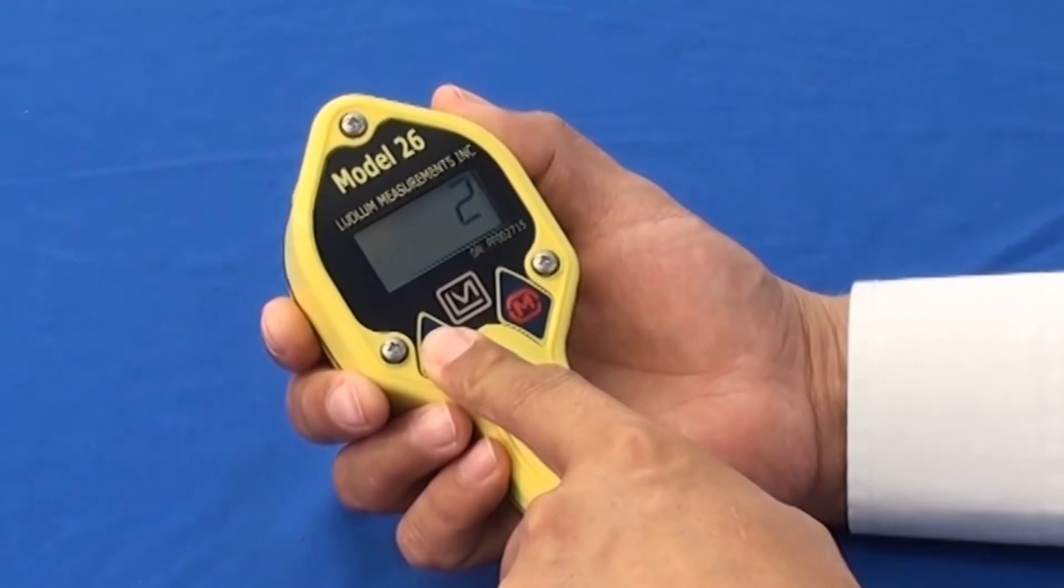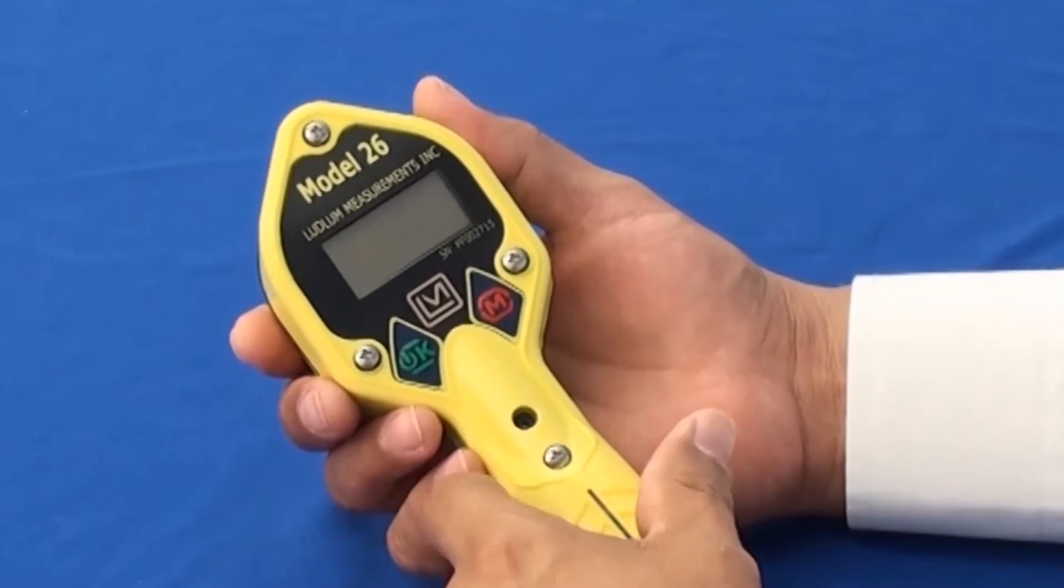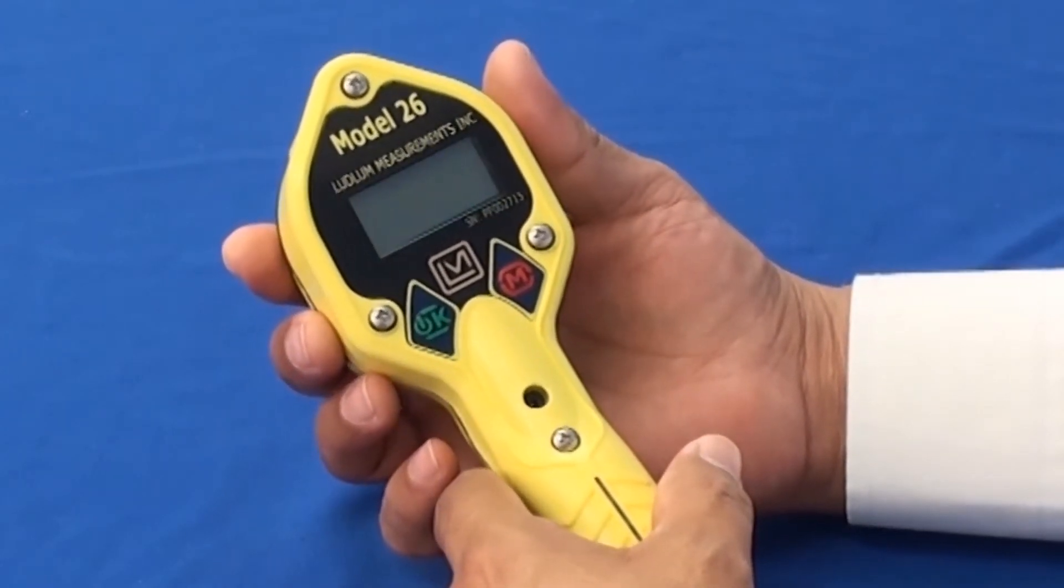Upon power down, you'll notice the display counts down for three seconds, at which point you'll release the power button and now you've turned the model 26 off.